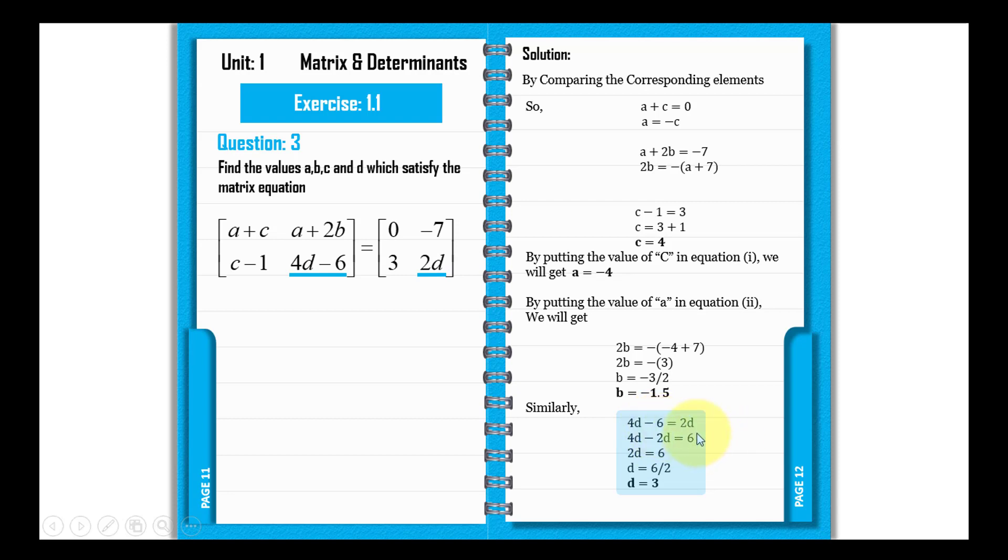Moving 2d to the left side, 4d minus 2d equals 6. So 2d equals 6, and d equals 6 over 2, which is 3.